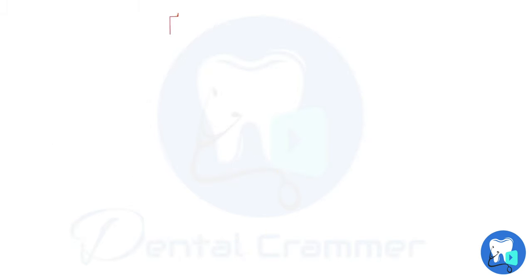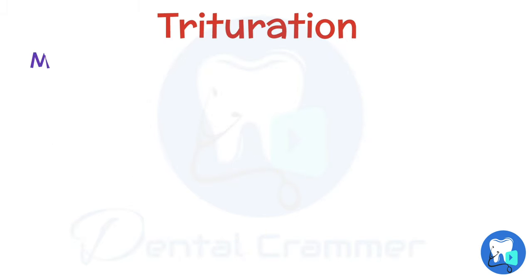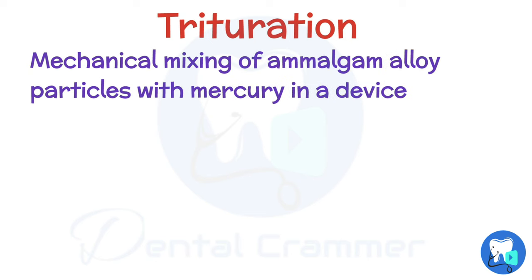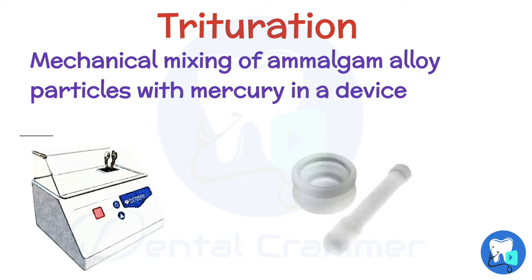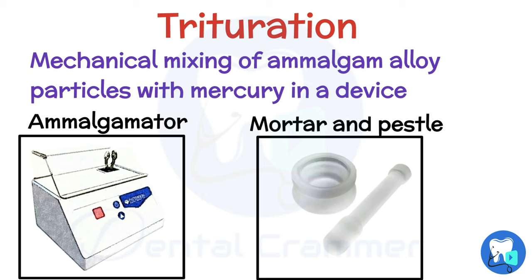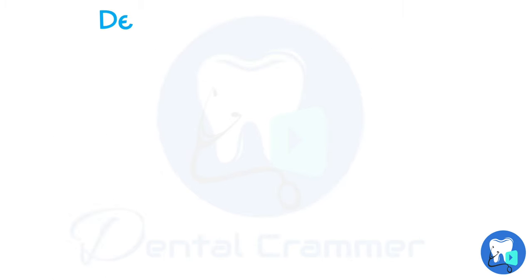Trituration means mechanical mixing of amalgam alloy particles with mercury in a device, whether it be an amalgamator or a mortar and pestle. As discussed previously, an amalgam contains mercury and an alloy.